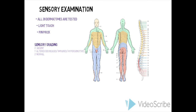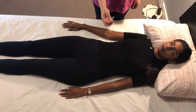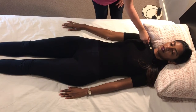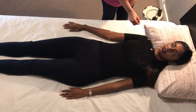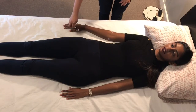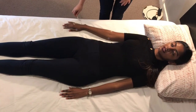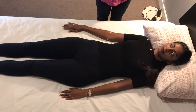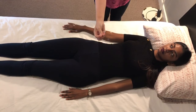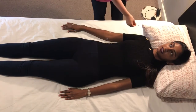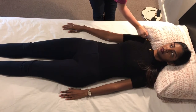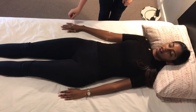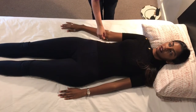Now we will demonstrate the sensory examination for the upper limb. We will start with light touch using cotton, in dermatomes C2, C3, C4, C5, C6, C7, C8, and T1. It is important to ask the patient whether they feel sensation, and if it feels normal. Now we will demonstrate pinprick examination of the upper limb with a safety pin, in dermatomes C2 to T1, as we did for light touch. These two examinations should be continued throughout all 28 dermatomes and repeated on the left side of the body.